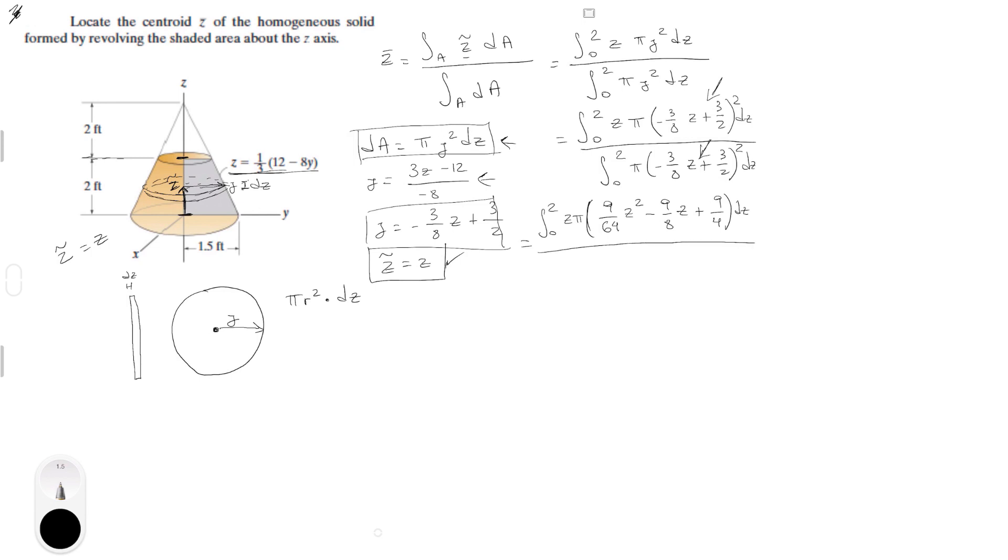All over, same thing. C over 2, but we solved it up there, so I am just going to copy it, 9 over 64 C square minus 9 over 8C plus 9 over 4 DC. Perfect.